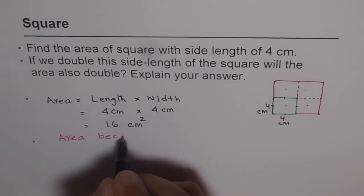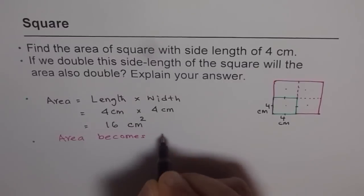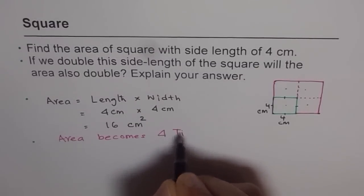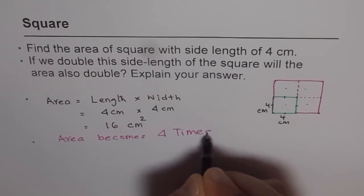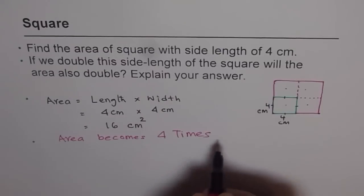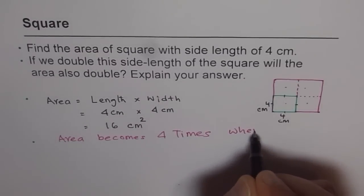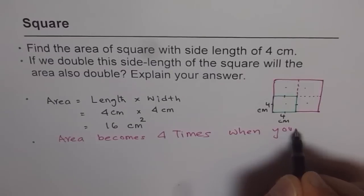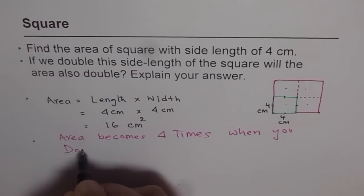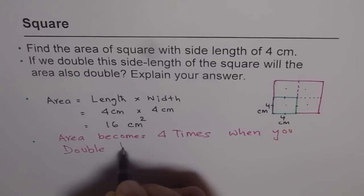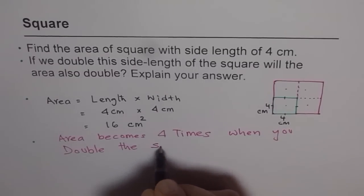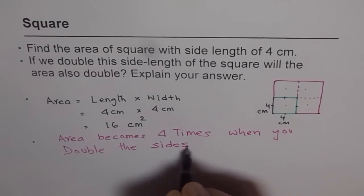Area becomes 4 times. It is 4 times, not just twice. So area becomes 4 times when you double the sides. That is very important to understand.